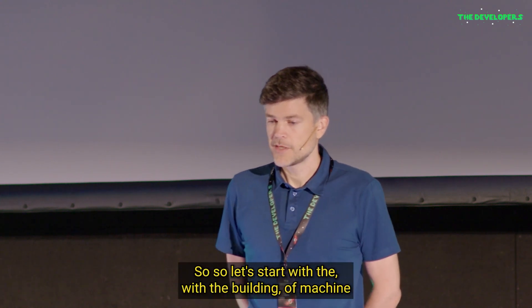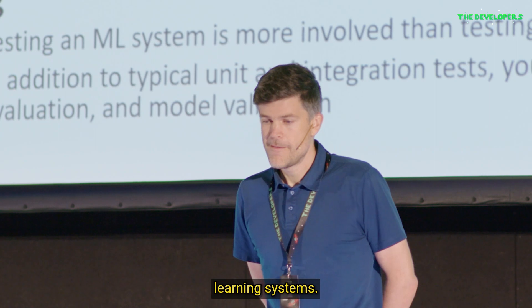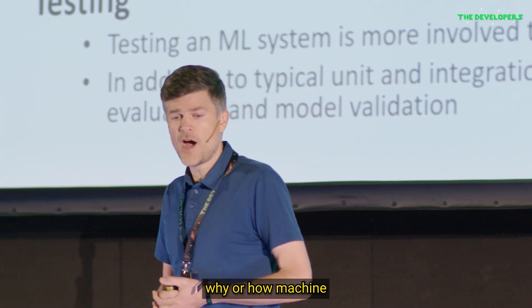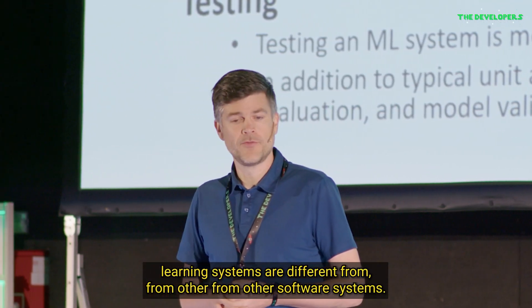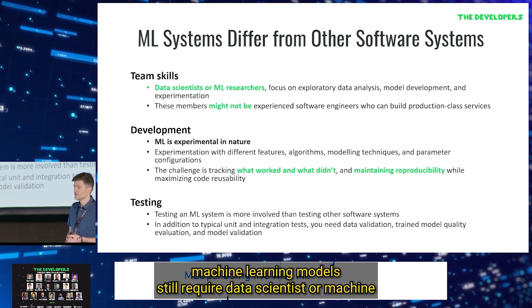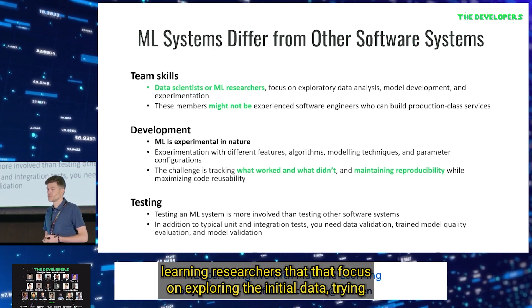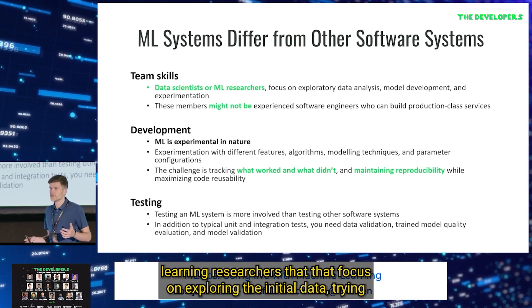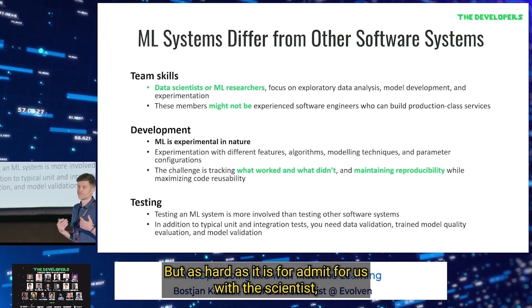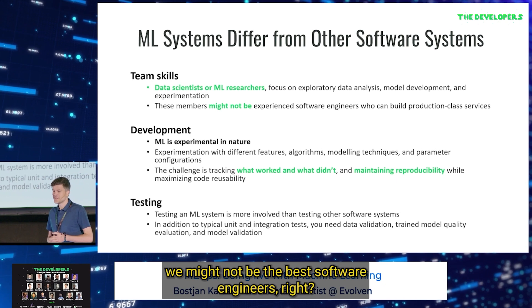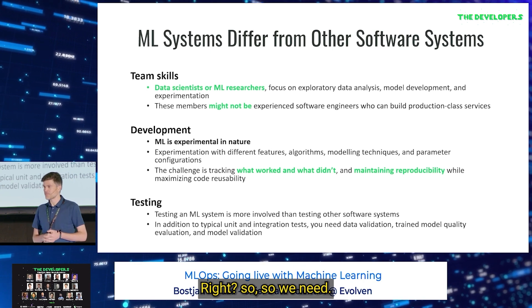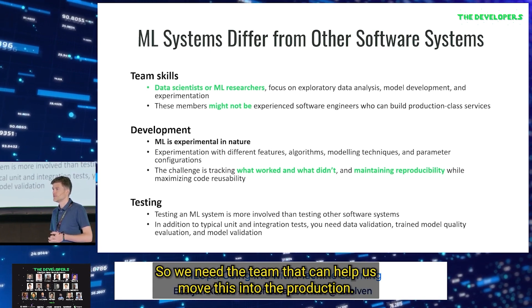Let's start with building machine learning systems. The first point is why and how machine learning systems are different from other software systems. The first difference is team skills. Machine learning models still require data scientists or machine learning researchers that focus on exploring the initial data, trying to understand the problem, and figuring out which algorithm works. But data scientists might not be the best software engineers who can build production-class services. So we need a team that can help move this into production.